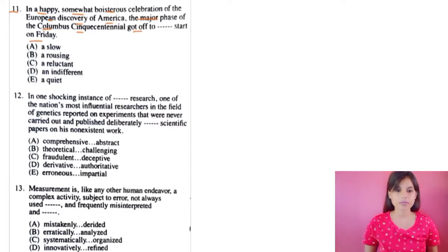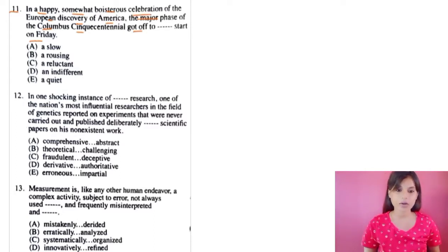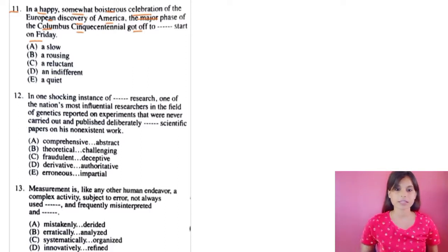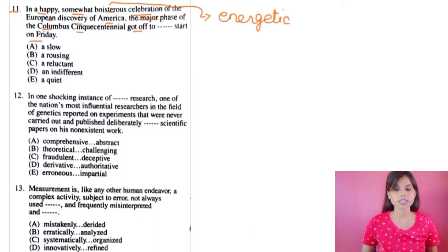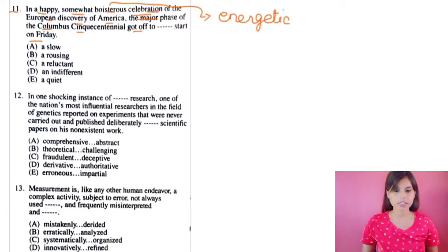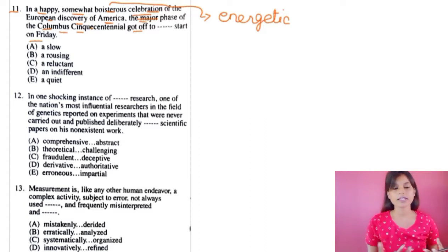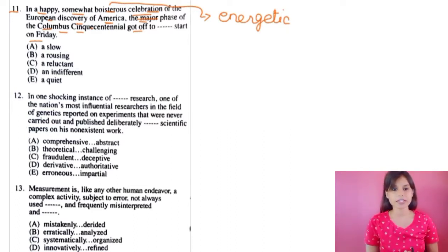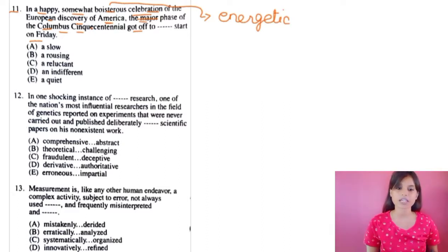We are talking about a boisterous celebration. Boisterous means kind of noisy, energetic, cheerful or lively — anything which shows excitement. So boisterous means energetic; you can also say gusty or blustery. It is a celebration of the European discovery of America, and the major phase of the Columbus Cinquecentennial got off to a dash start on Friday.